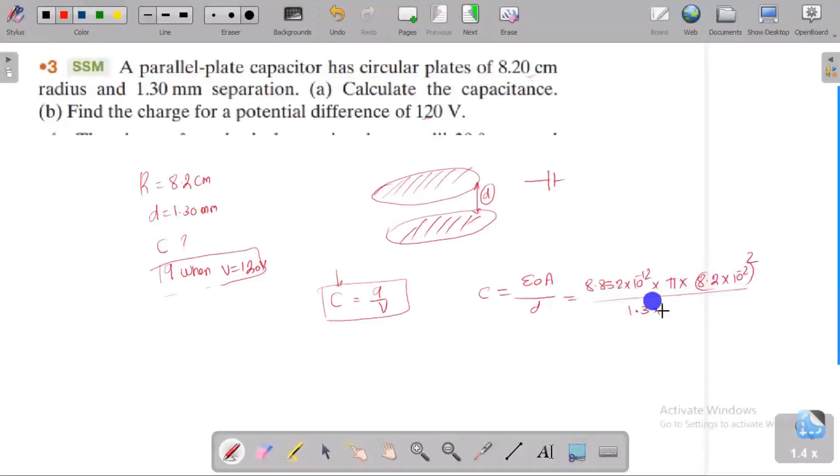So doing the calculation we get the capacitance is 144 picofarad. Picofarad is 10 power minus 12. The answer one.